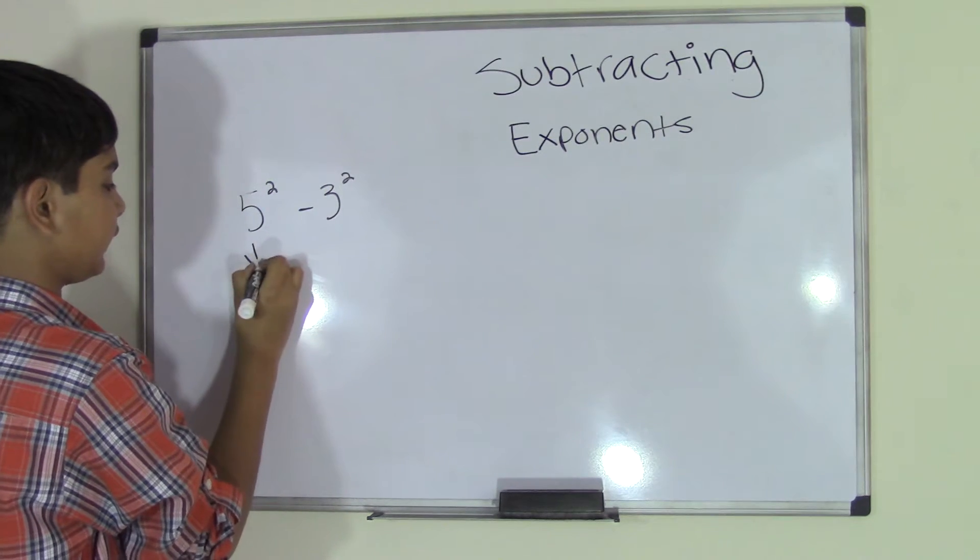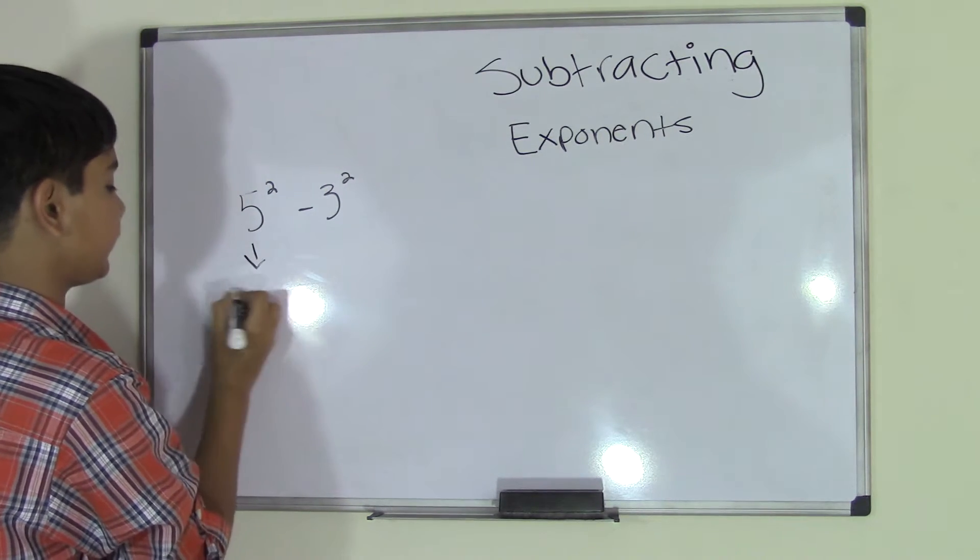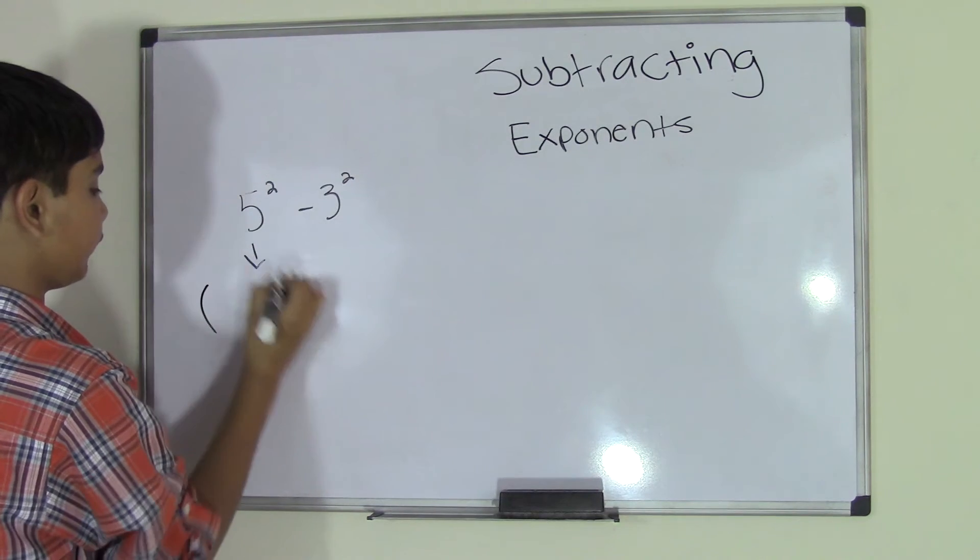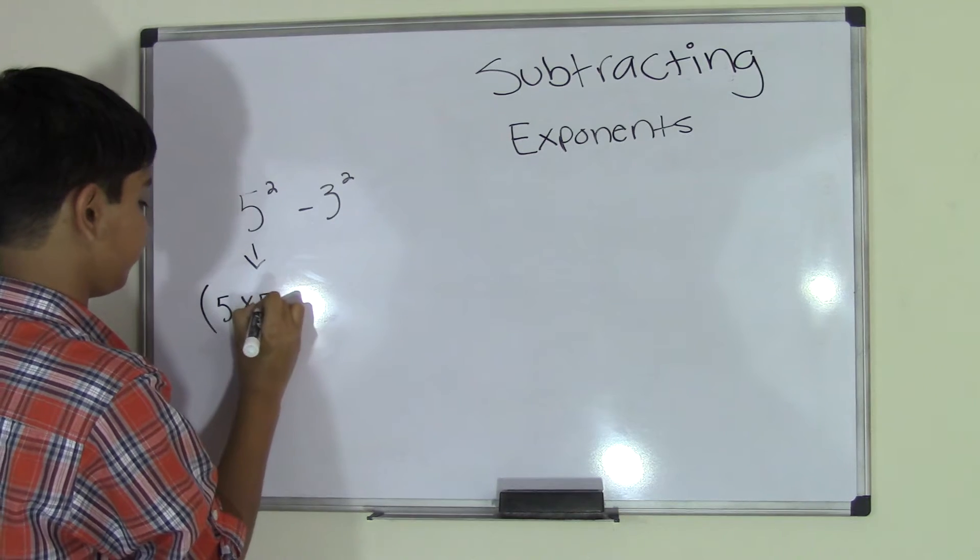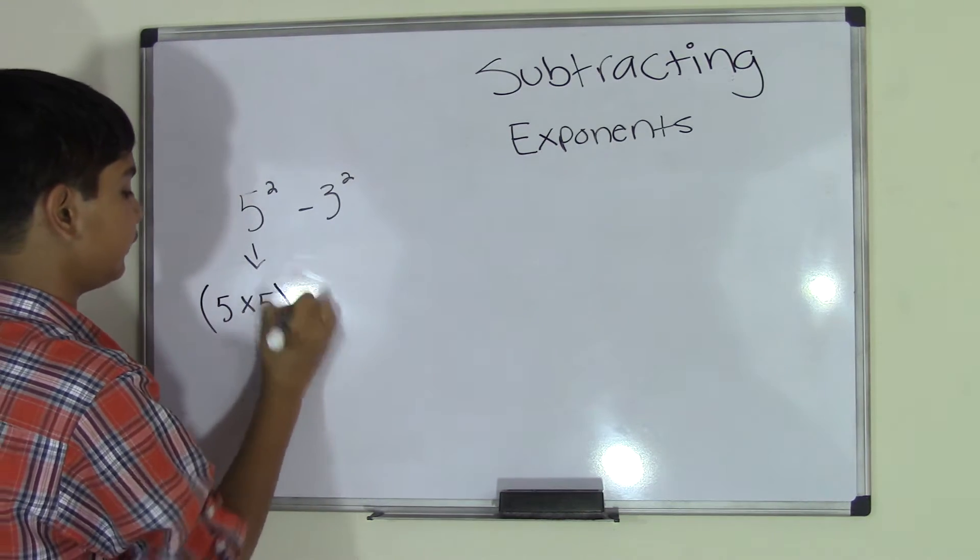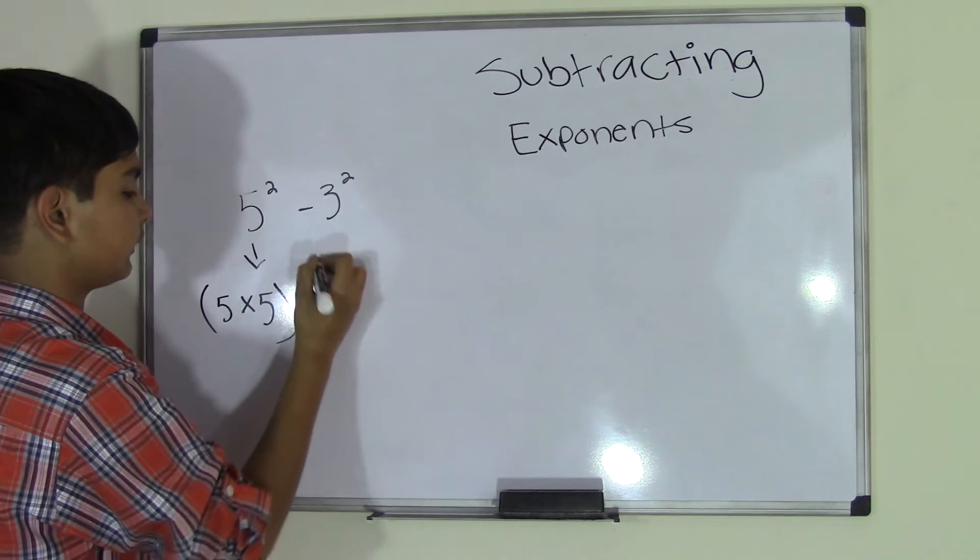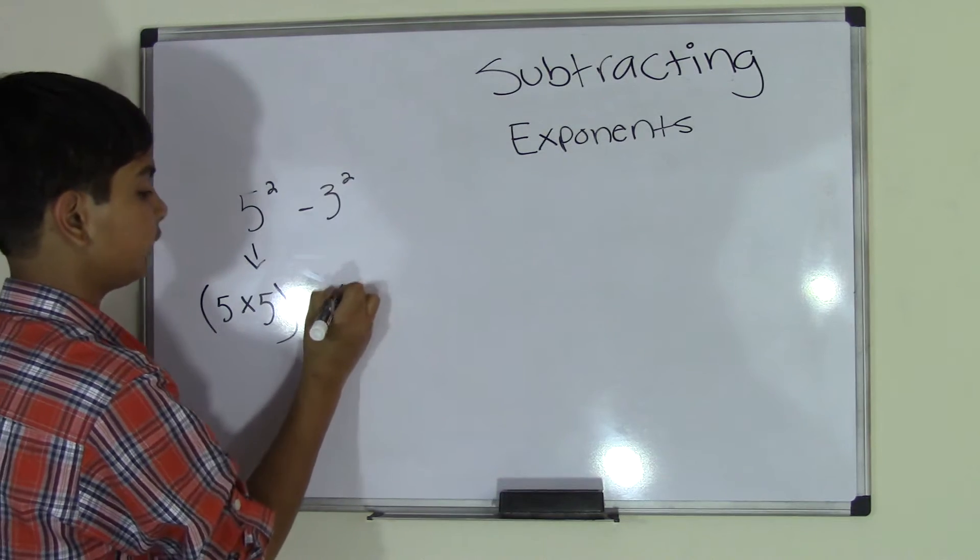Remember, always change the exponents into multiplication form. So we're going to do that in parentheses: we'll do 5 times 5 because it's 5 to the power of 2. In the parentheses, add the subtraction sign, and the same over here.